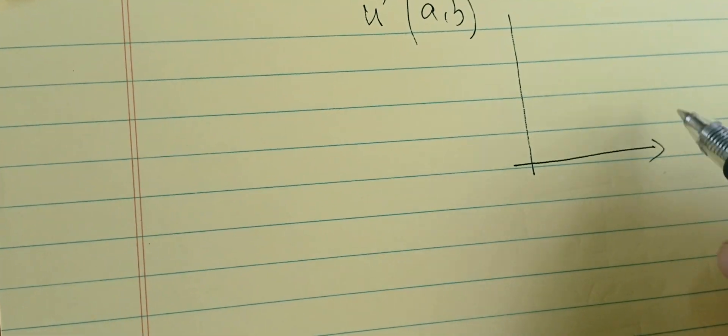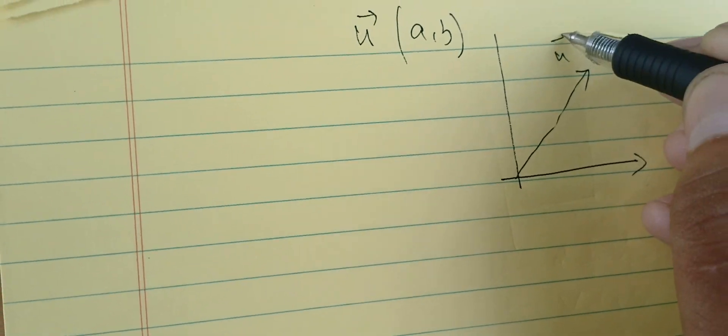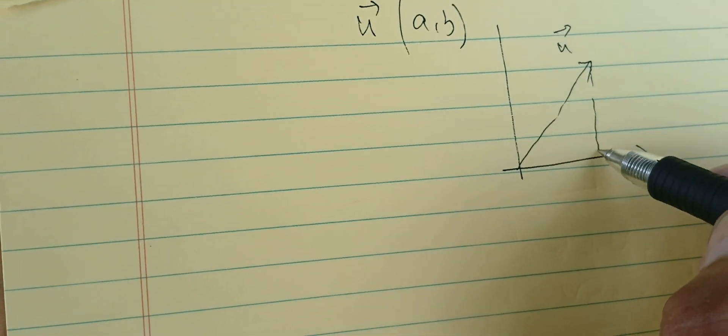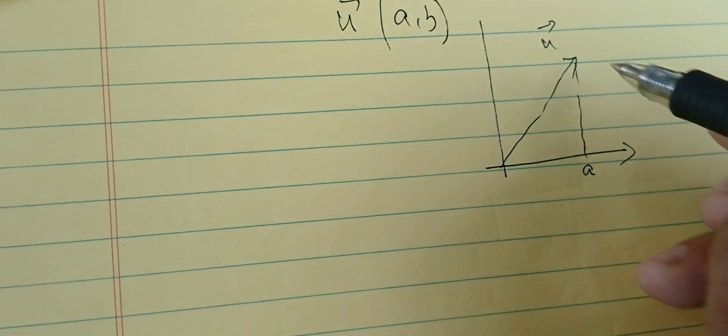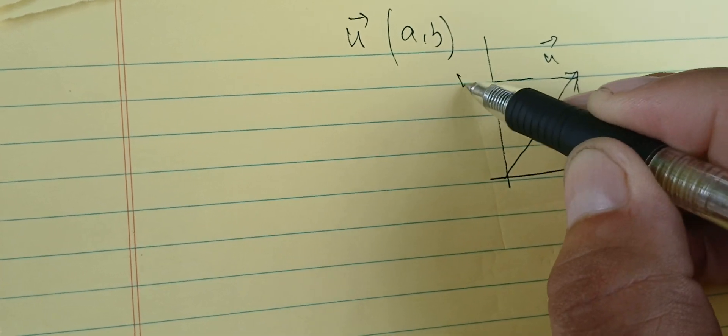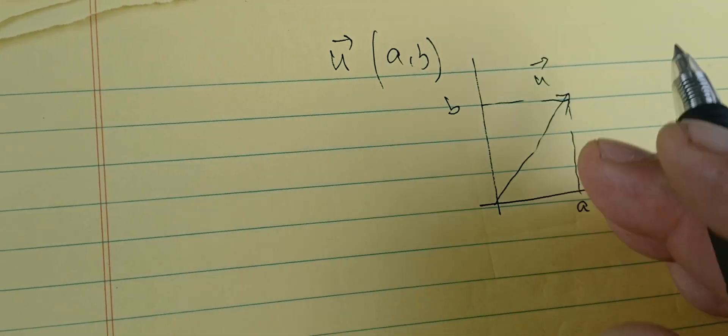So when we represent this vector, we always do it with respect to the origin. This is my vector; it has a as the x-coordinate and b as the y-coordinate. The norm is the length of this vector.